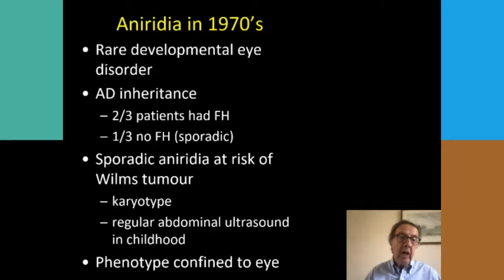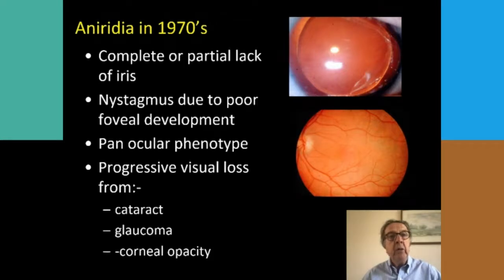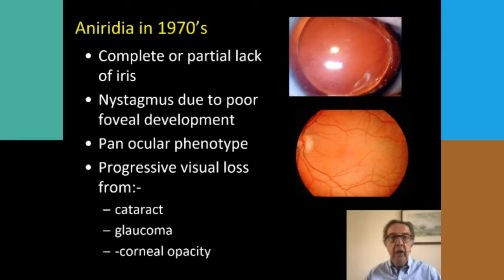We also at that time believed that the phenotype — the patient's aniridia — was purely an eye disorder and no other problems. We knew a lot about the eye abnormalities. We knew that there was either complete or sometimes partial lack of iris. Most patients had nystagmus, and this was associated with a lack of development of the centre of the retina, the fovea. Patients lost vision mainly from advancing cataract, or particularly glaucoma and corneal opacities.